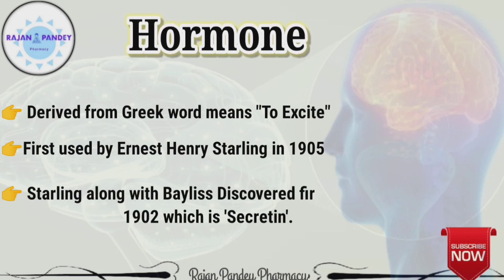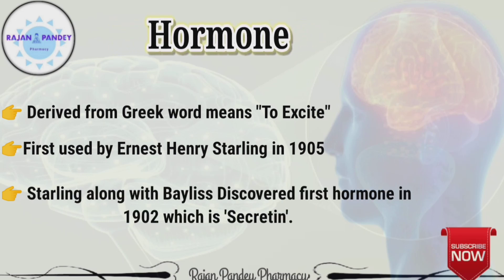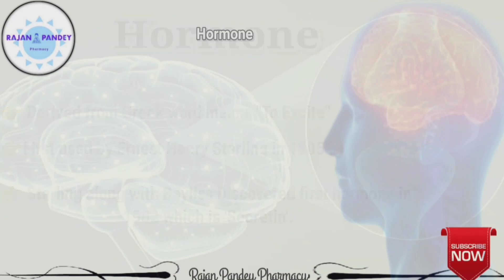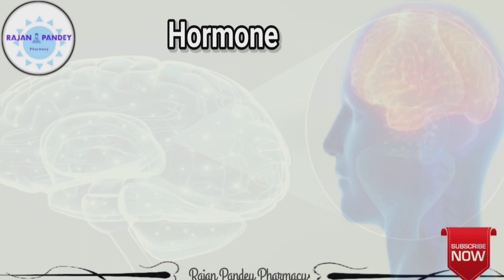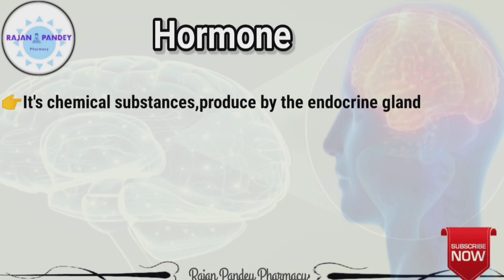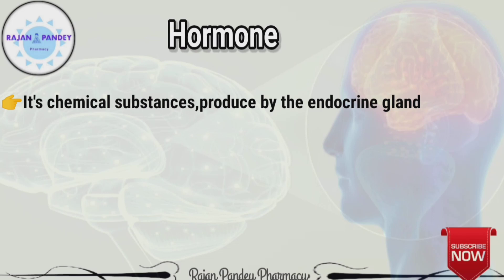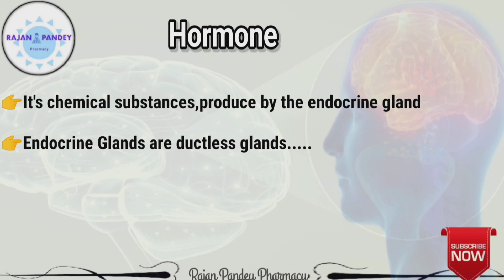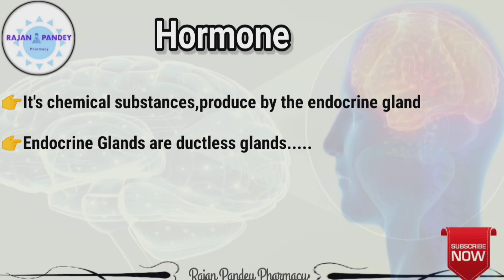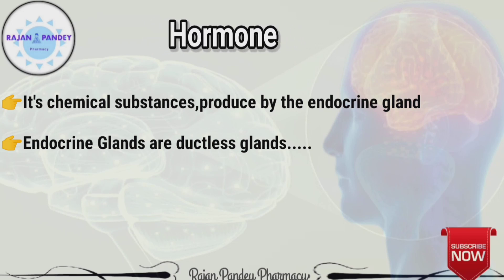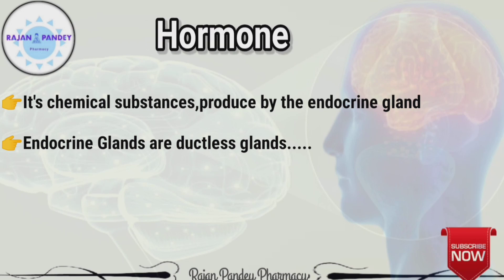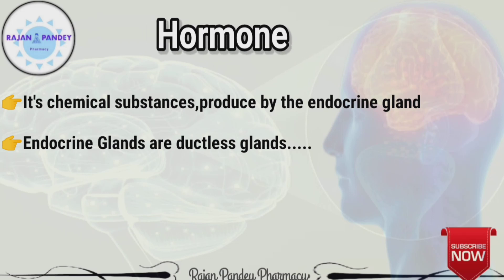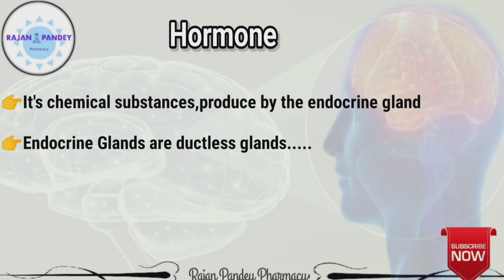Starling, along with Bayliss, discovered the first hormone in 1902, which is secretin. An endocrine hormone is a chemical substance produced by the endocrine glands in response to certain stimuli. The endocrine glands are ductless glands, meaning the substances they secrete are not transported to body parts via ducts.